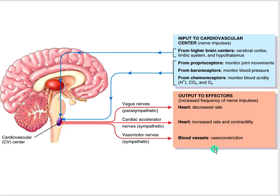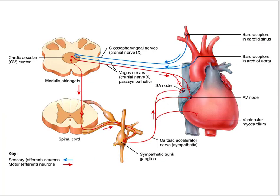Vasoconstriction makes the lumen smaller and vasodilation makes the lumen bigger. These are a result of integration through the cardiovascular control centers and then autonomic output to the blood vessels. We've looked at baroreceptors and how those impact blood pressure — baroreceptors monitor pressure in the carotid sinus and the aortic arch, sending input into the cardiovascular control center.